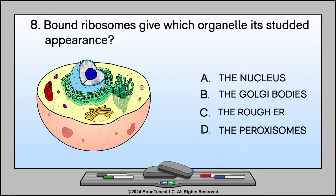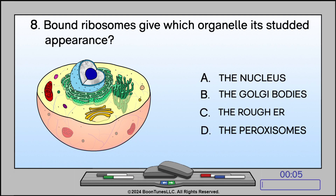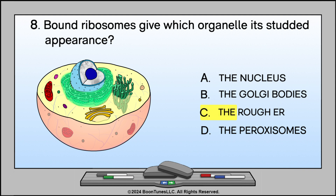Bound ribosomes give which organelle its studded appearance? A. The nucleus, B. The Golgi bodies, C. The rough ER, or D. The peroxisomes? The answer is C. The rough ER.